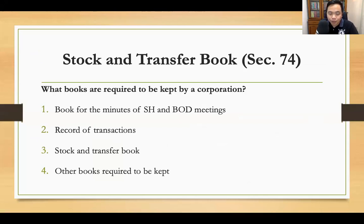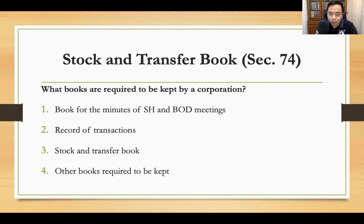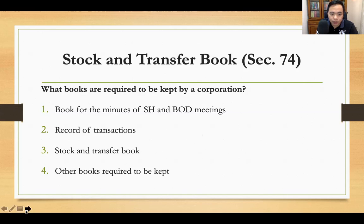This is what we call the STB or the Stock and Transfer Book. This is the book which is required by law under Section 74 to be kept by the corporation. The other documents required to be kept by the corporation are: books for the minutes of the stockholders and board of directors meetings, commonly prepared by the corporate secretary or assistant corporate secretary. Also the record of transactions of the corporation, the stock and transfer book, and other books required under Section 74.